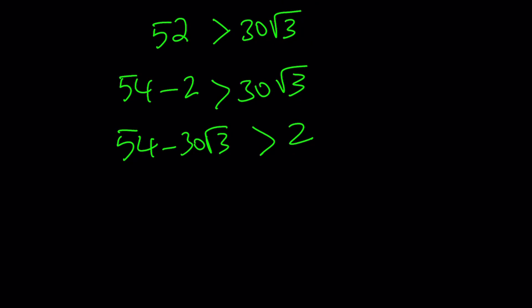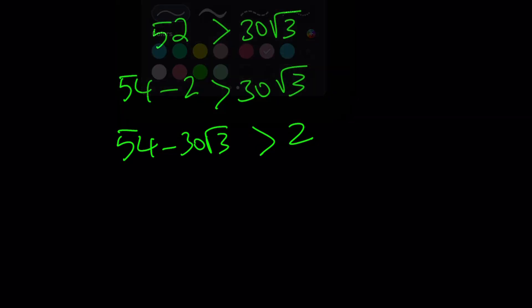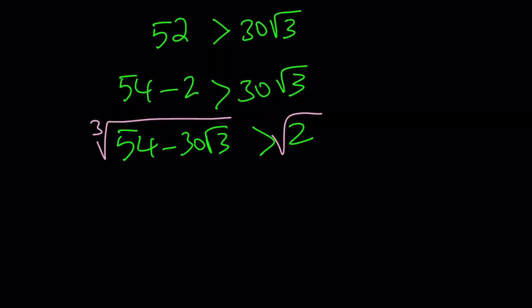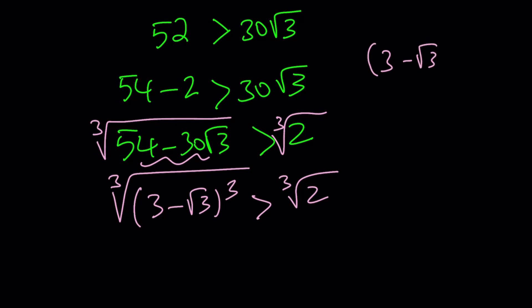And then, I'm going to go ahead and cube root both sides. Now, at this point, you might be questioning, why is he cube rooting both sides? Because 54 minus 30 root 3 is the cube of a radical. We're going to find that out right now. And when you cube root this, because this expression right here is 3 minus root 3 cubed. And how do I know that? Or how do you prove that? I'll show you.